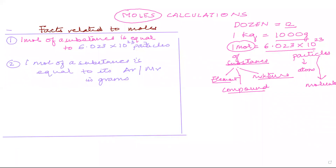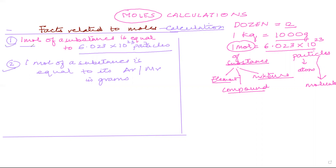Moles are normally used for calculations in chemistry. There are certain facts related to moles that help with the calculation part. We use moles for calculating reactants or products. The first fact is that one mole of a substance contains 6.023 × 10²³ particles — atoms if it's an element, molecules if it's a compound.